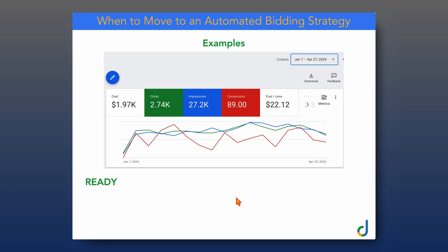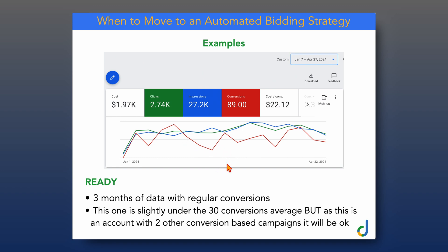The second example is ready. The reason I'd say this one is ready is that we've got three months of data with really regular conversions — looking at the red line of conversions on a weekly basis, there hasn't been any week where we've gone to absolutely zero conversions. This one is slightly under the benchmark of 30 conversions on average per month, but because it's only one under and this account has other campaigns running on conversion-based bidding, we know this campaign would work really well with it.